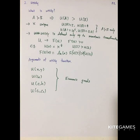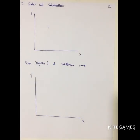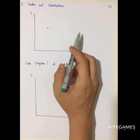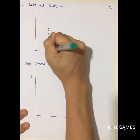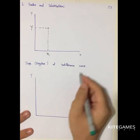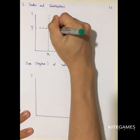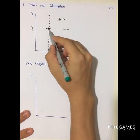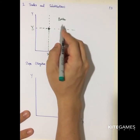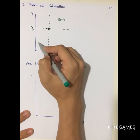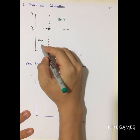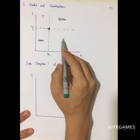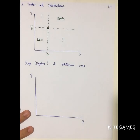Next, we'll talk about trade and substitution. Given a point X1, Y1, you can determine four regions. For the upper right, it is always better because there is more X and more Y. For the bottom left, it is always worse because there is fewer X and fewer Y. For the other two regions — more X with fewer Y, or more Y with fewer X — we don't know whether they are better or worse.